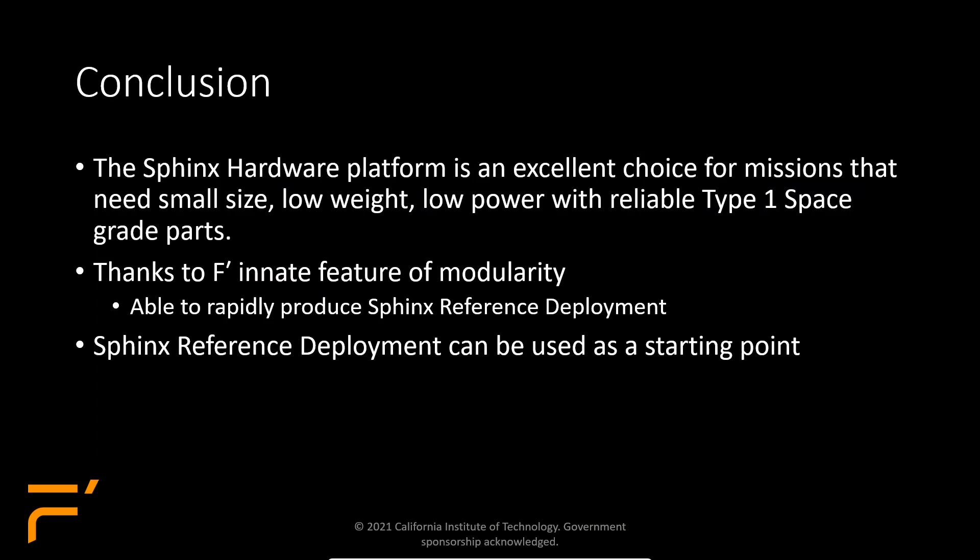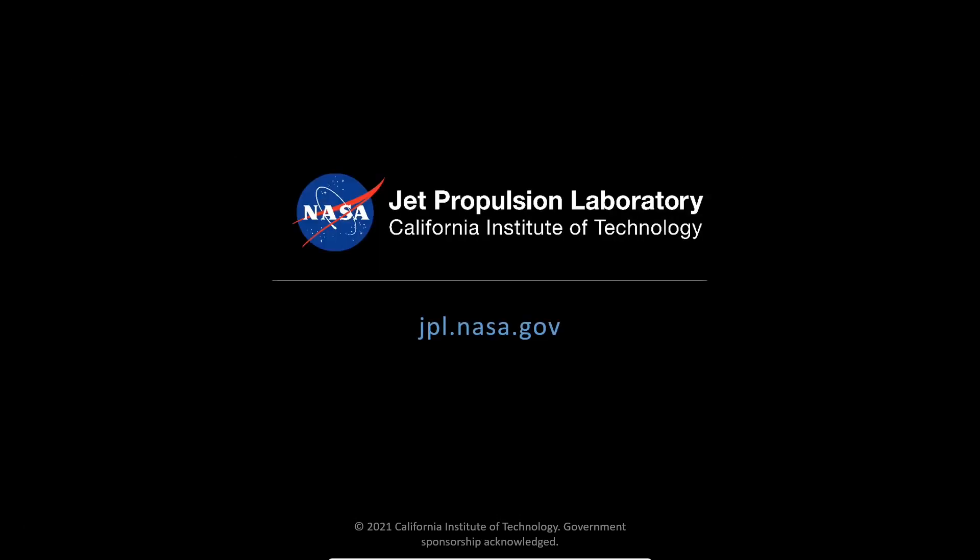Closing remarks: the Sphinx hardware platform is an excellent choice for missions that need small size, low weight, low power, with reliable Type 1 space-grade parts. Thanks to the innate features of modularity in F', we were able to rapidly produce this Sphinx reference deployment by focusing our development effort on the deployment-specific components — that purple layer. This Sphinx reference deployment can be used as a starting point for those projects using the Sphinx platform. Thank you for listening to our talk.